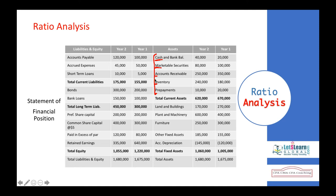In a liquidity analysis, we find the working capital, current ratio, quick ratio — also called the acid test ratio — cash ratio, and cash flow ratio. We use these ratios to find the liquidity position of a company. Let's begin with working capital, which is the amount required to operate the business on a day-to-day basis.